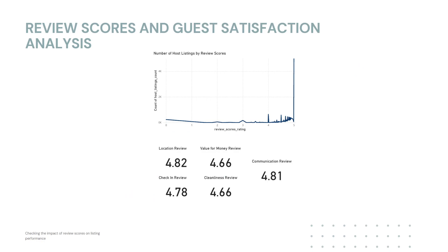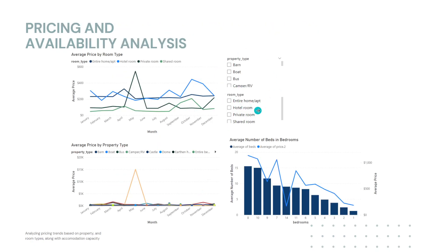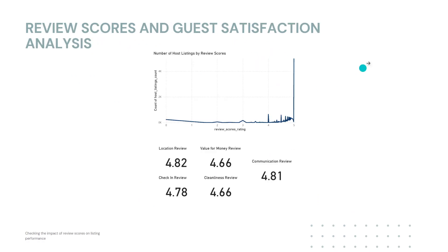We can also see that the number of reviews and the review score itself, which ranges from zero to five, indicates that the higher the number of reviews or higher the value of the review — such as five — the number of listings goes way up. So reviews matter a lot. I've also added a few cards showing location review, value for money, check-in, cleanliness, and communication, which are all very important metrics. This card also filters through these clusters of cards.